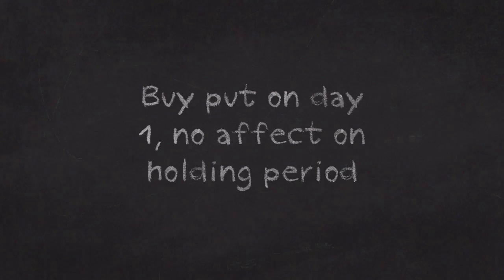But, if you buy a put on the day you bought the stock, then they are called a married put. They are married to each other, and it has no effect on your holding period. You can continue counting day 2, day 3, day 4, day 5 going forward.